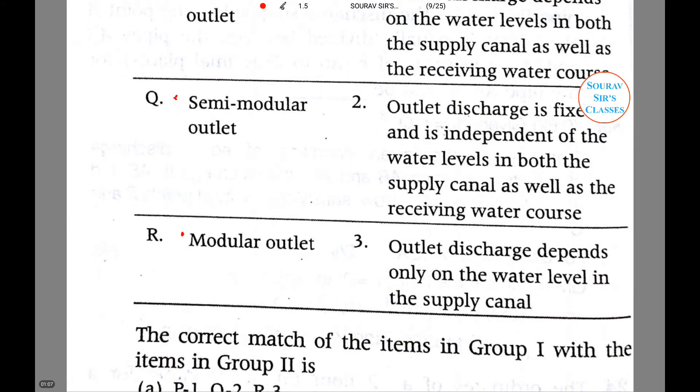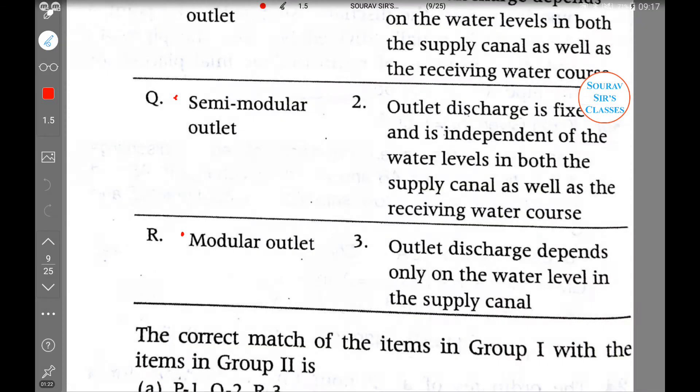Before jumping into the hydraulic performance attributes, let me tell you what the attributes of these are, one by one. First, let us insert a page and we will talk about the different broad classes of irrigation supply canal outlets.